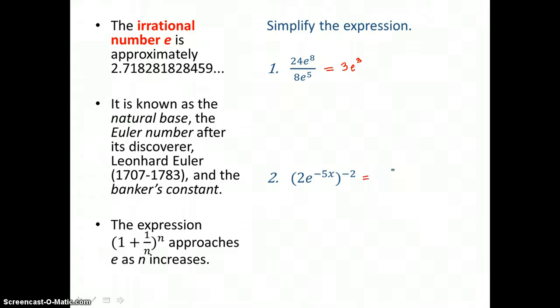In our second problem, we're going to get rid of that negative exponent first by moving 2e to the negative 5x power to the denominator and making that exponent positive 2. Then we get rid of the parentheses in the denominator. When we raise a product to a power, we raise every factor to that power. So 2 is squared and e to the negative 5x is raised to the second power. When we have double exponents, we multiply them. So I have 1 over 2 squared, which is 4, and e to the negative 10x power. We raise that base e to the numerator and make the exponent positive 10x. So our final answer is e to the 10x power over 4.